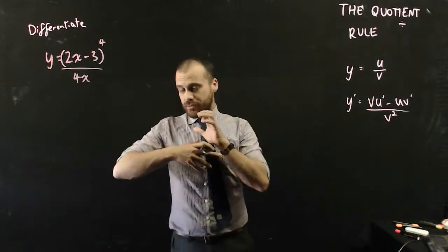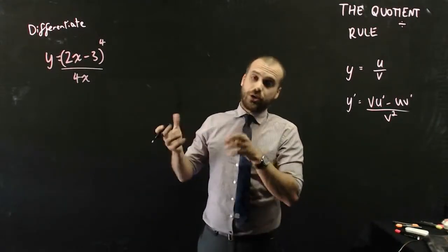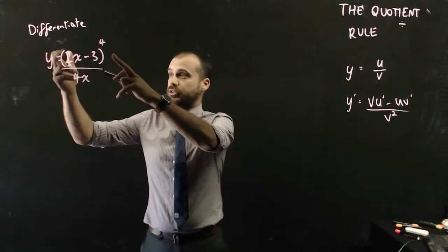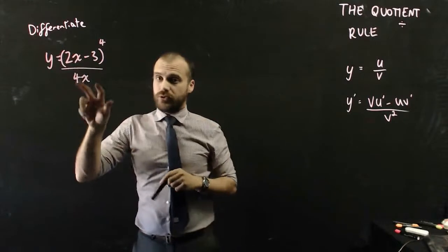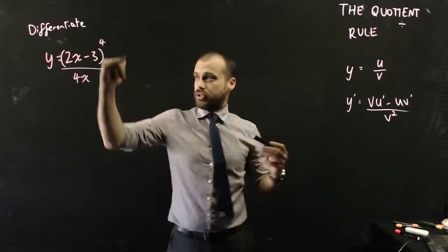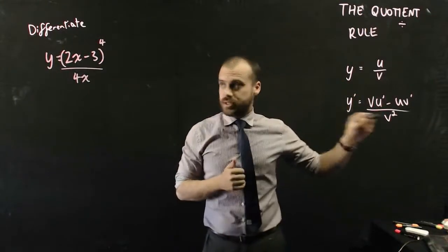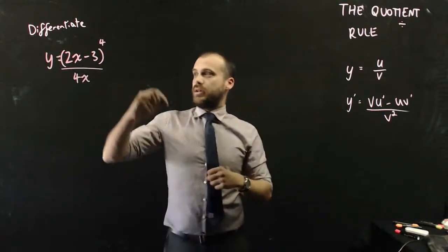So, the quotient rule can also be combined with the chain rule or the product rule as well. Now, here I have a function, (2x minus 3) to the power of 4, over 4x. And we can still, so it's a function over a function. So, we can use our quotient rule and we can use this thing here. So, let's just write everything down.